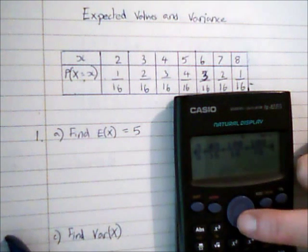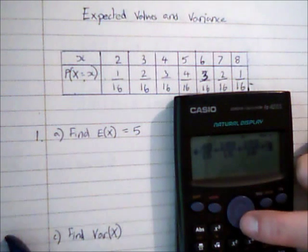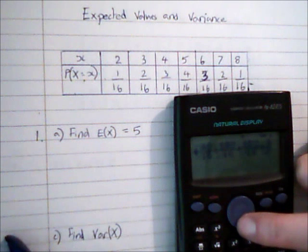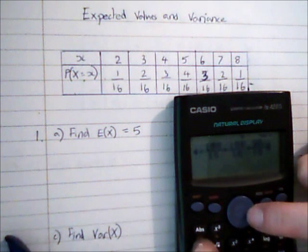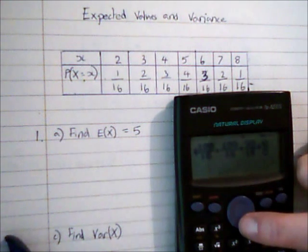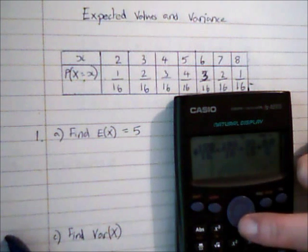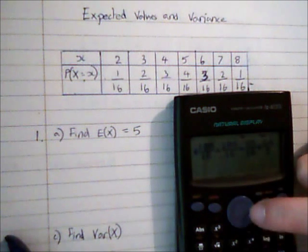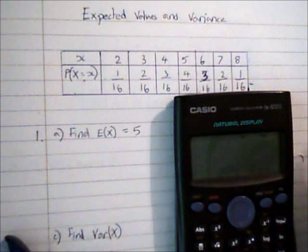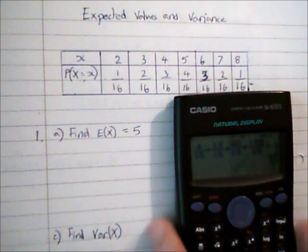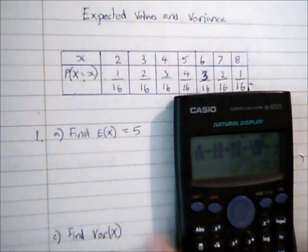so 36 times 3 is going to be 108 over 16, and 7 squared times 2, so it's going to be 98 over 16. And then here 8 squared, so it's going to be 64 times 1 over 16. And that gives me 55 over 2, which is then going to be 27.5.